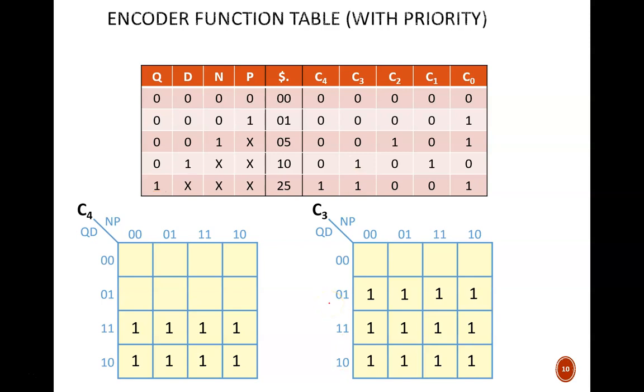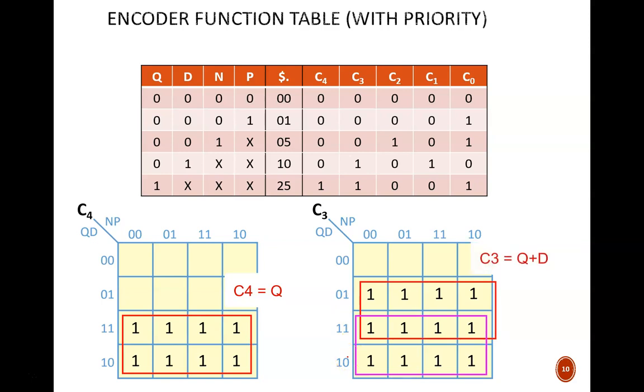It is nice how many big blocks of 1s fill out these maps. The equations will be simple. This group of 8 tells us that C4 equals Q. These two groups of 8 tell us that C3 equals Q or D. The next equations will only be slightly more complicated.